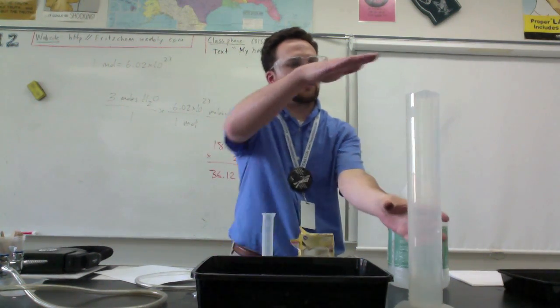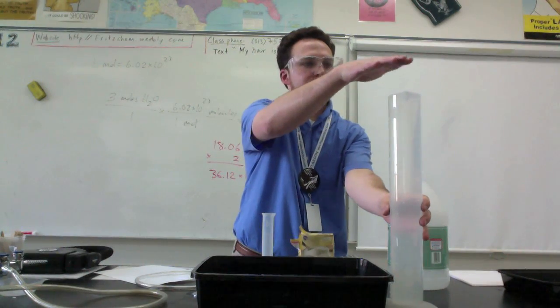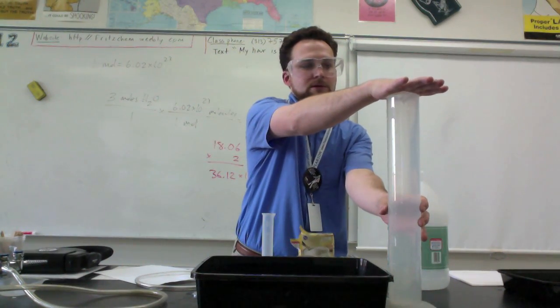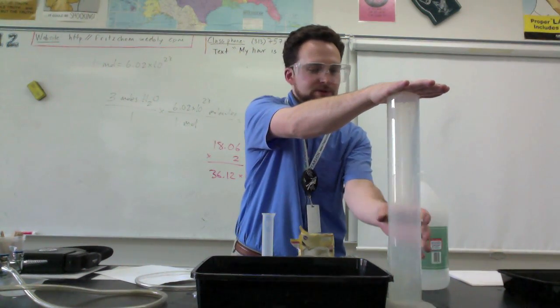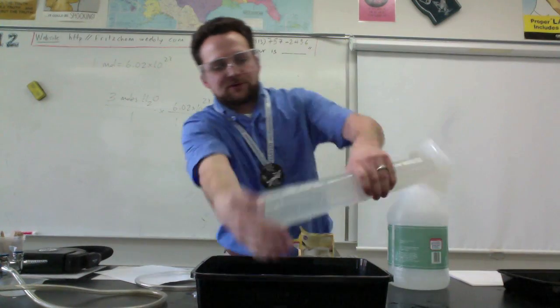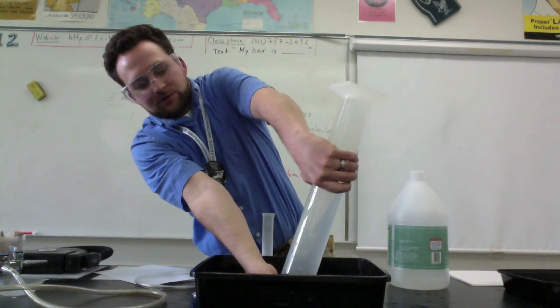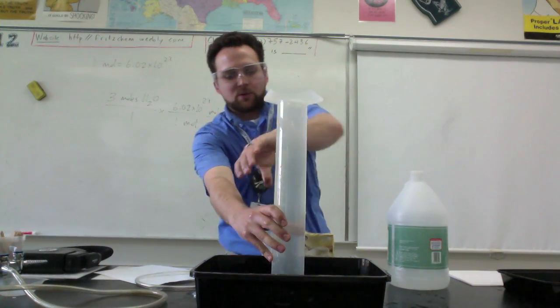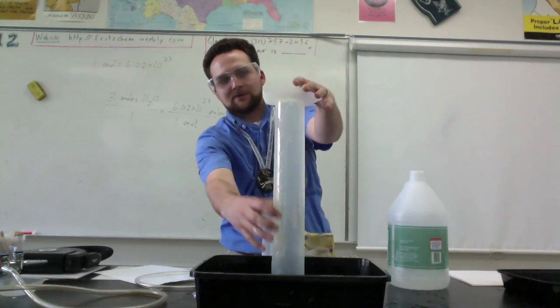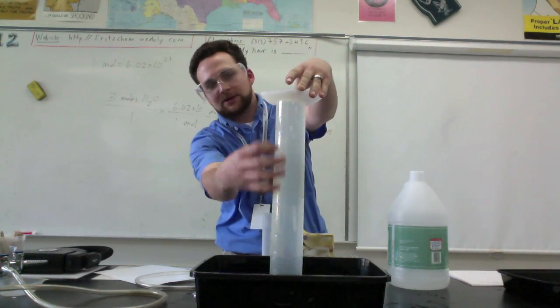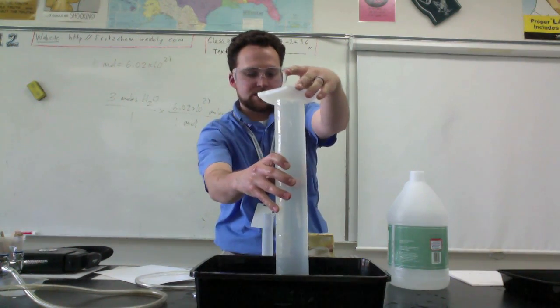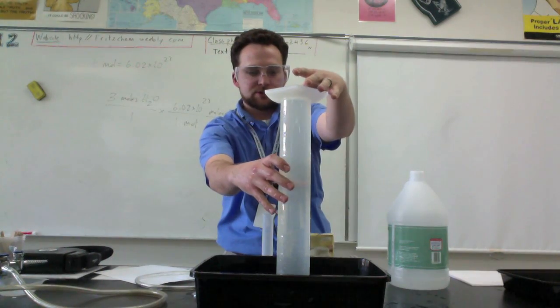Basically what I'm going to do first is take this graduated cylinder, cover it with my hand. If a little water comes out, that's fine. Cover it with my hand, flip it over as fast as I can, make sure that the graduated cylinder is under the water, and then take your hand off so that now I've trapped all the water in here. You notice it's not coming out or anything. So first, that's the first thing you want to do, make sure it doesn't tip over.